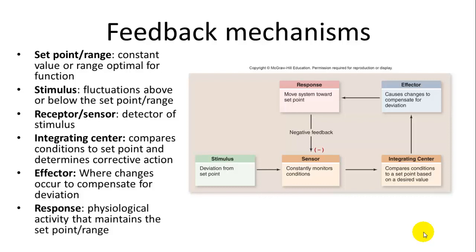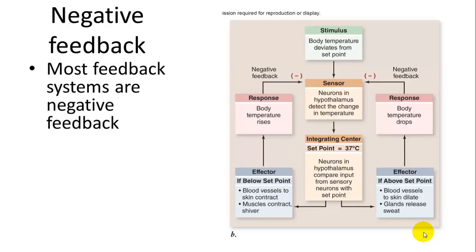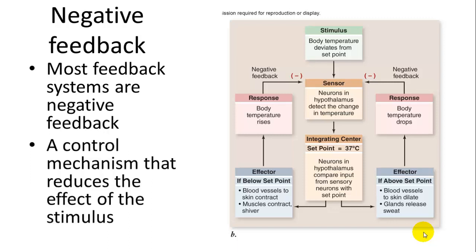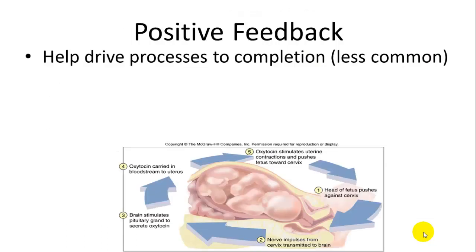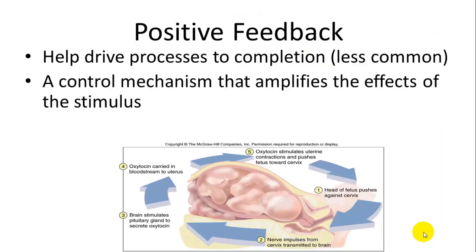The response is the activity by the effector to move towards that set point. These can be negative or positive feedback. In negative feedback, you are pulled away from the set point and then something is done to bring it back to that set point — you're working against the stimulus. Positive feedback, which is less common, is a control mechanism that amplifies the effect of the stimulus.